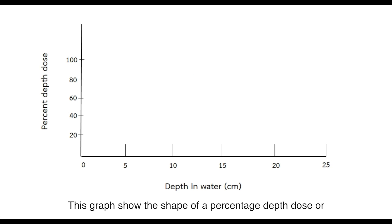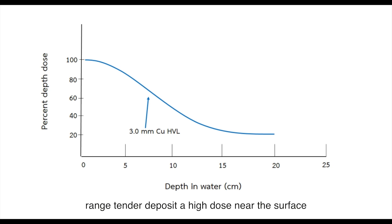This graph shows the shape of the percentage depth dose or PDD curve. It depends on the beam energy. Low energy beams in the kilovoltage range deposit a high dose near the surface which falls off very rapidly with depth, as we see here with a 3 mm copper HVL kilovoltage beam.